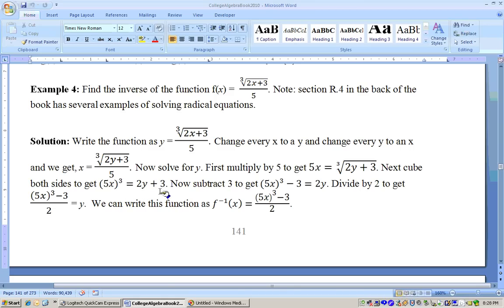Get rid of the 3. Yep, subtract 3 from both sides. And that would give me 5x³ - 3 = 2y. And finally, get rid of the 2 by dividing. Yep, divide by 2. And bingo, that's what y equals now. And that would be the inverse function. So I would write f inverse of x equals this.